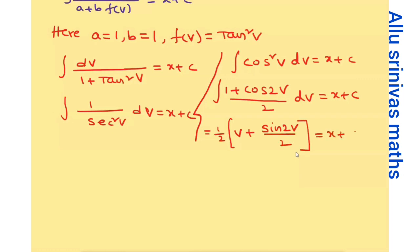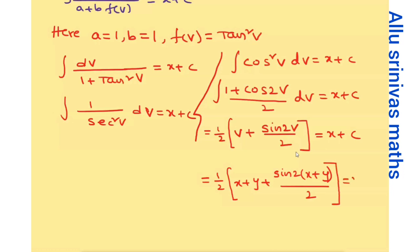Now substituting back v equals x plus y, the final answer for the given problem is: (x plus y) plus sin(2x plus 2y) divided by 2, all divided by 2, equals x plus c. This is the final answer for the given problem. This shortcut makes the problem easy to solve.